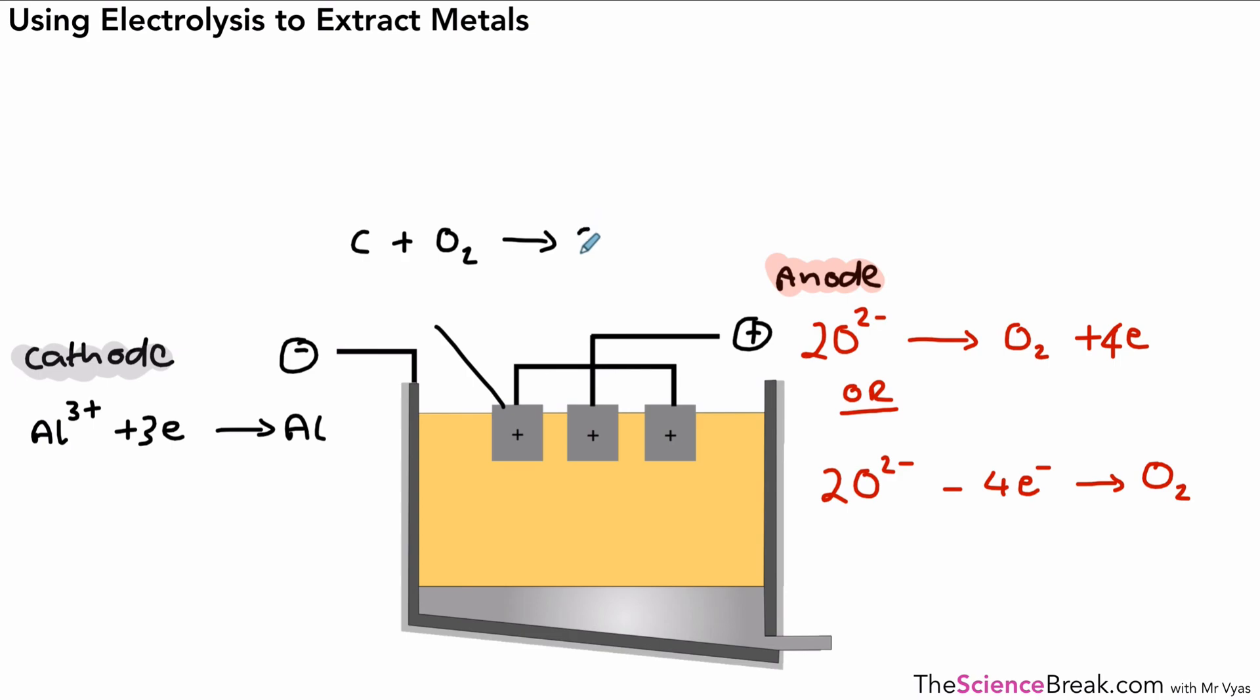At the anode, we also have the reaction of carbon with oxygen, so that is carbon reacting with oxygen, making CO2 gas. Okay, so this is the extraction of aluminum using electrolysis and the half equations that go along with the process. Thank you for watching, and I'll see you soon.